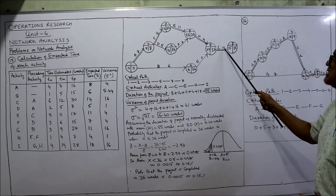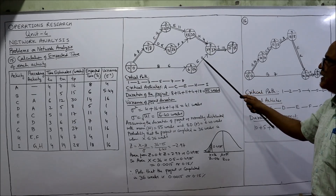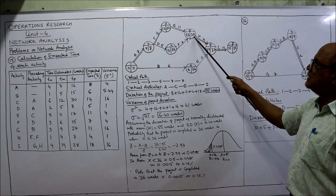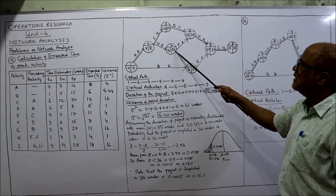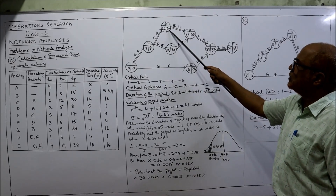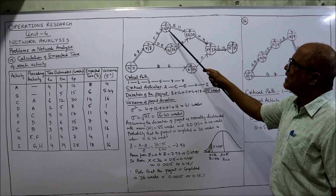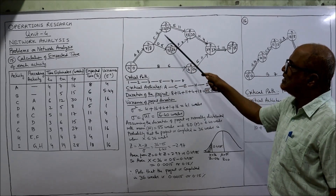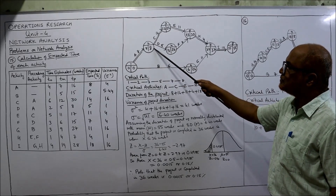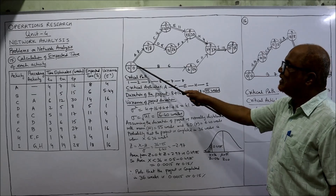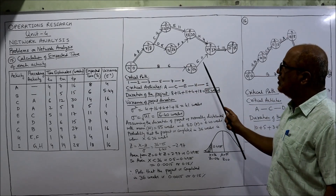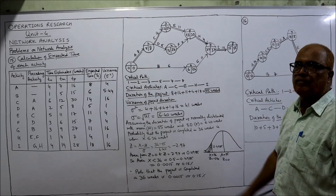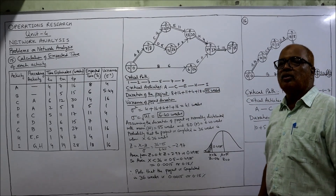Now we move to the backward pass to calculate LFT (Latest Finish Time). Starting from the last event: 55 − 18 = 37. Then 37 − 11 = 26. Similarly, 37 − 4 = 33. Then 33 − 7 = 26 and 33 − 11 = 22. Two arrows bursting: take the minimum of (22 − 14 = 8) and (26 − 5 = 21) — 8 is less. Two arrows bursting: minimum of (8 − 8 = 0) and (26 − 6 = 20) — 0 is less. All EST and LFT values are now obtained.